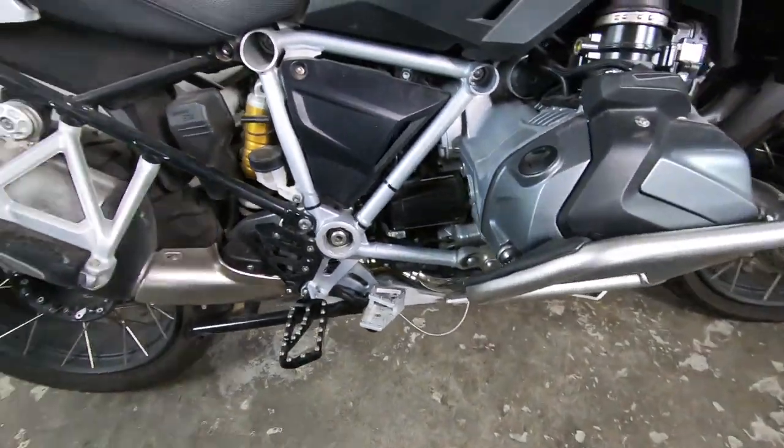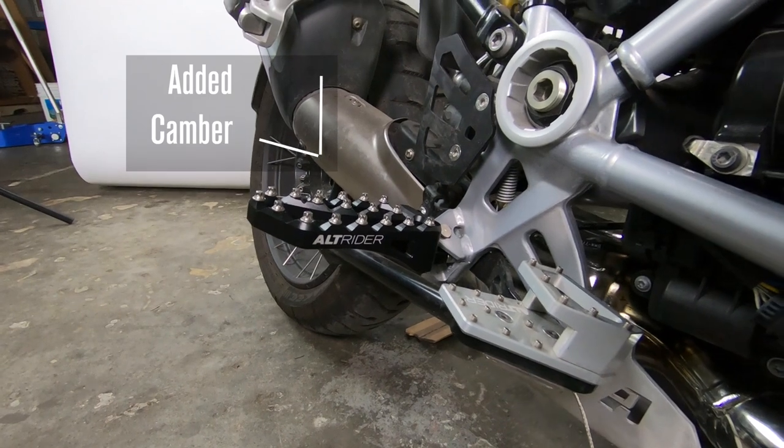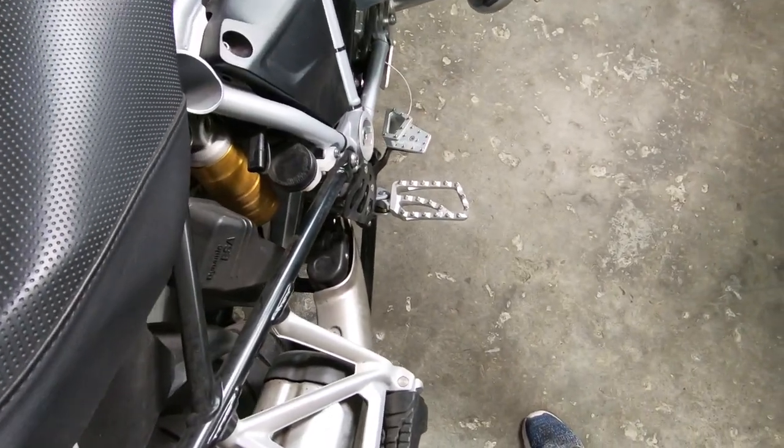They're customizable in that you can set a neutral setting which is close to 90 degrees to your bike, or you can add some additional camber to help keep your feet on the pegs and give a little bit of extra leverage when you steer with the pegs.